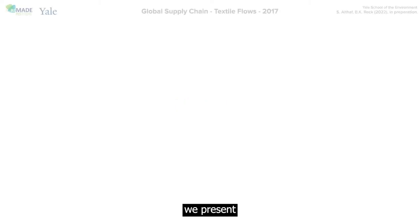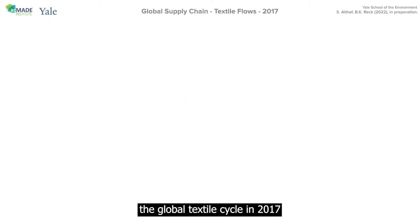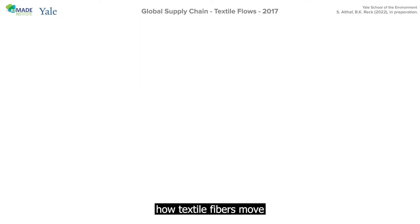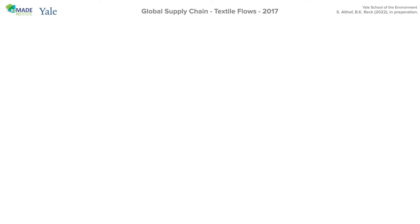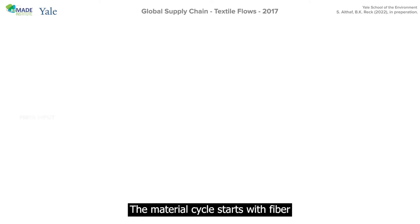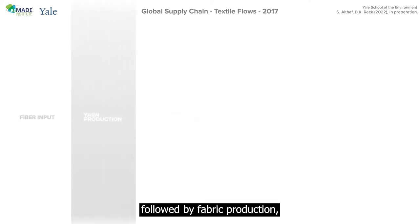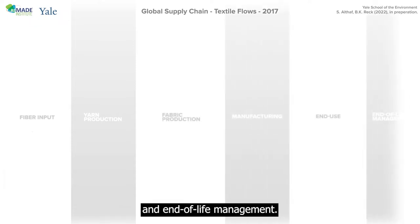In this animation, we present the global textile cycle in 2017 to illustrate how textile fibers move along the value chain from production to end of life. The material cycle starts with fiber input to yarn production, followed by fabric production, product manufacturing, end use, and end of life management.